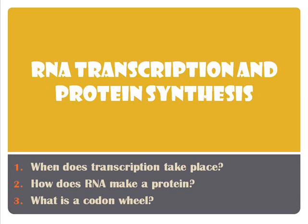In order to make a protein, you have to start with DNA and RNA. We're going to talk about transcription and translation. By the end of this, you should be able to know when transcription takes place, how RNA makes a protein, and what a codon wheel is.